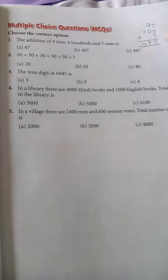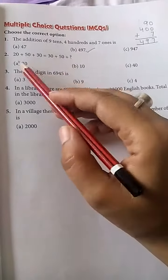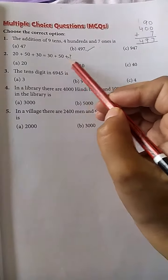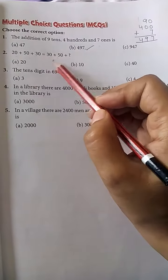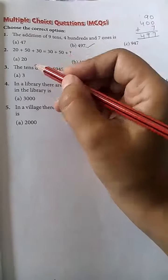497. Option B is correct. Problem 2: 20 + 50 + 30 = 30 + 50 + ? The order changed—first came 30, then 50, but 20 is missing. So answer A is correct.